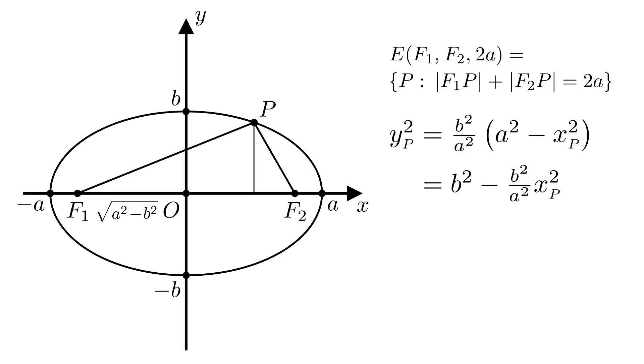Which is equal to b squared minus b squared over a squared times xP squared. Let's show xP and yP on the image.